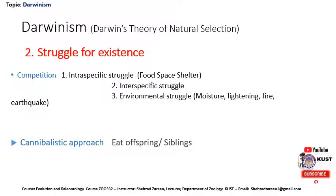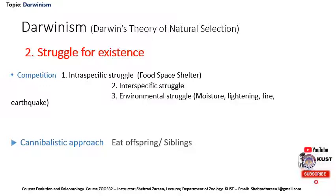Intraspecific struggle is that which occurs within the members of the same species — for food, space, and shelter. Interspecific struggle is that which occurs among the members of different species. Environmental struggle is against moisture, lightning, fire, earthquake, and things like that.